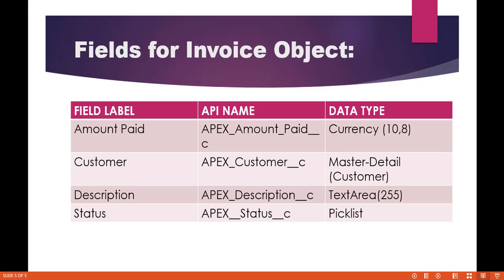The fields for the Invoice object — we are going to add four fields. One will be the Amount Paid. The second is the Customer, which is going to be the relationship field. The third field is the Description about the invoice. The fourth field is the Status field, which will tell you about the status of the invoice — whether somebody has paid it, not paid it, is it pending, unpaid, or paid. We are going to create all these fields and these two objects in our next tutorial.